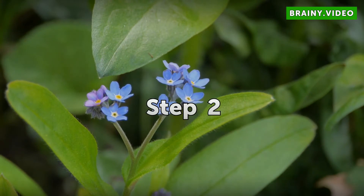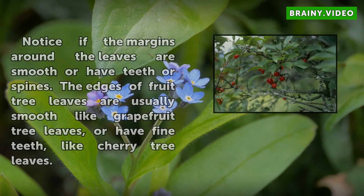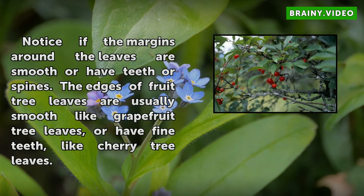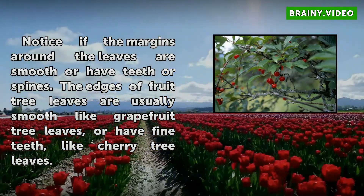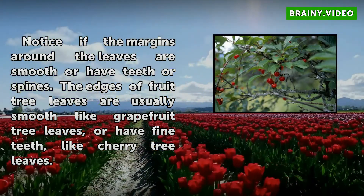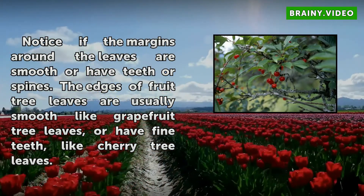Step 2. Notice whether the margins around the leaves are smooth or have teeth or spines. The edges of fruit tree leaves are usually smooth like grapefruit tree leaves, or have fine teeth like cherry tree leaves.